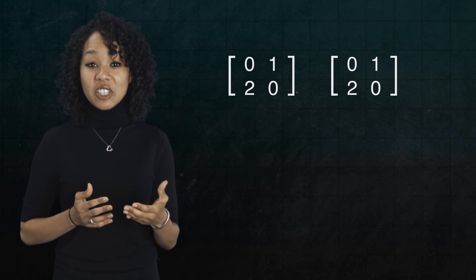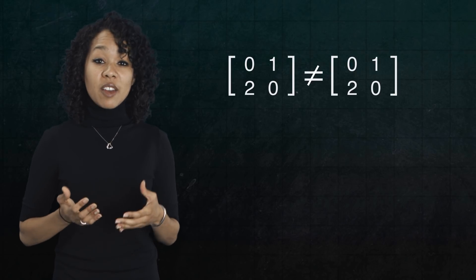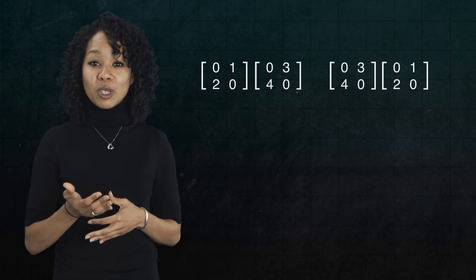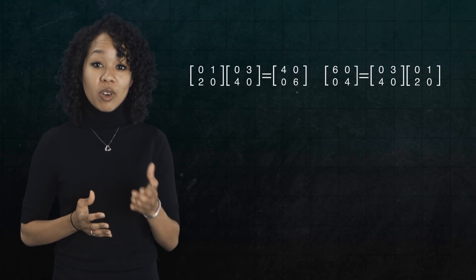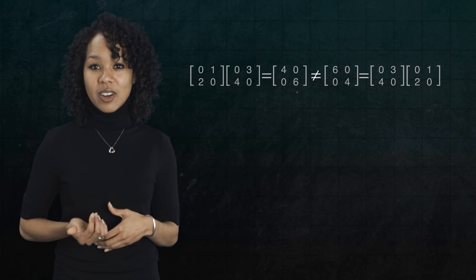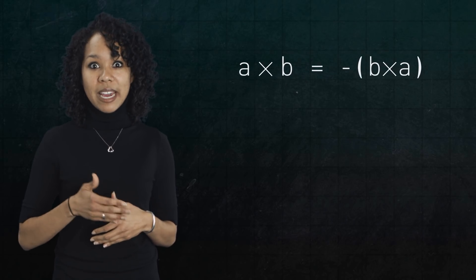For example, getting dressed in the morning, because putting on your socks and then your shoes is not the same as first putting on your shoes and then your socks. Similarly, matrix multiplication is in general not commutative. If you multiply two matrices, two arrays of numbers, the order in which you multiply them matters. In fact, the cross product of vectors is also not commutative. It's what we call anti-commutative. A cross B is equal to minus B cross A.